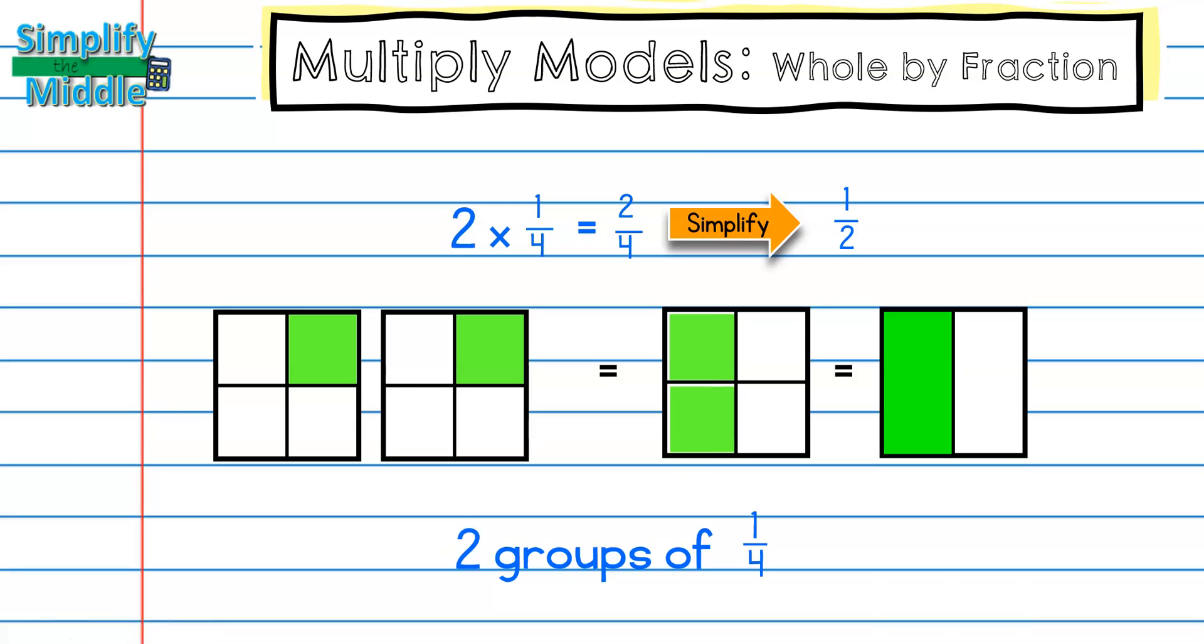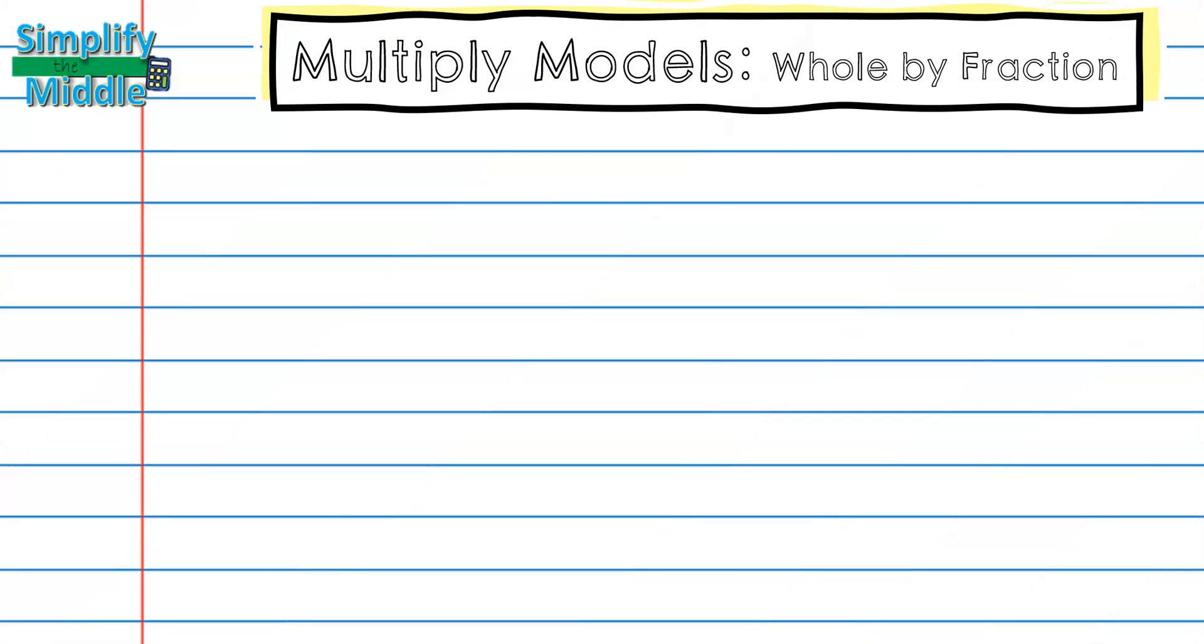When I simplify and divide a 2 from the top and a 2 from the bottom, I end up with a half. So 2 groups of 1/4 is equal to 1/2. Let's do another example.